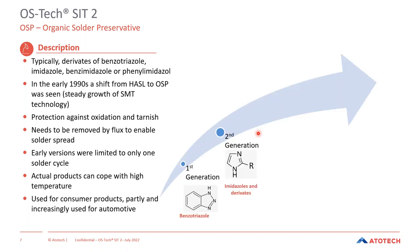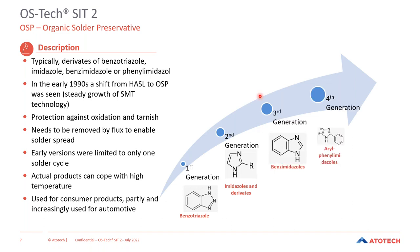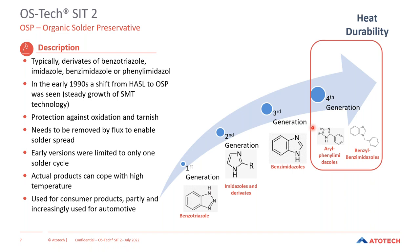Looking at the different generations of OSPs, they use different key components. With increasing generations, they became even better in heat resistivity — the latest generations being used now are quite heat resistant and can survive several reflow cycles. Typical applications include consumer products and also increasingly the automotive industry.